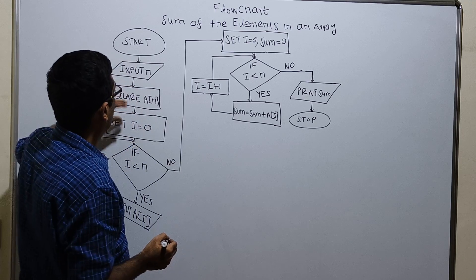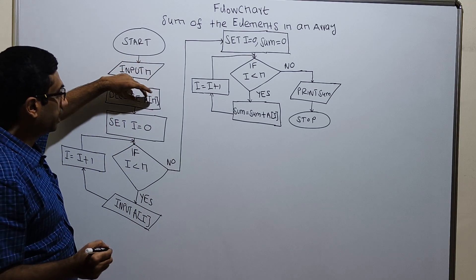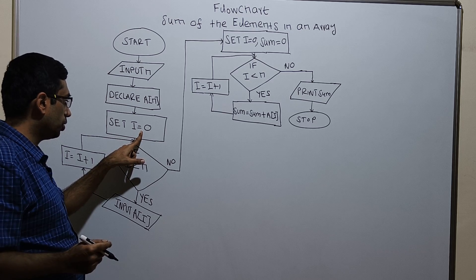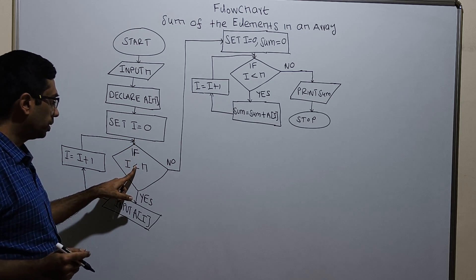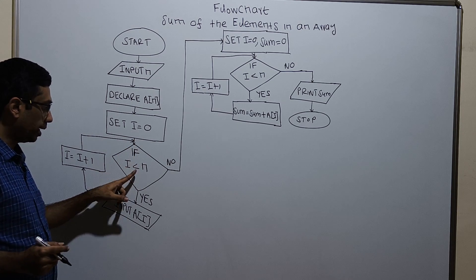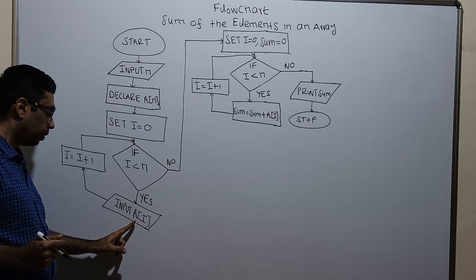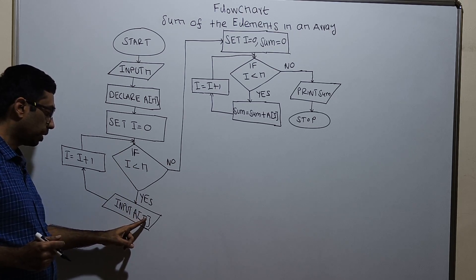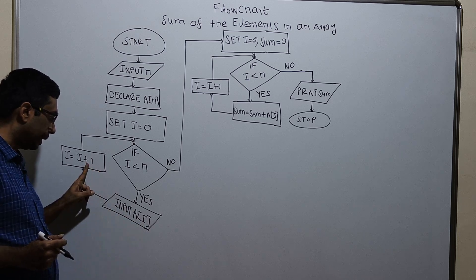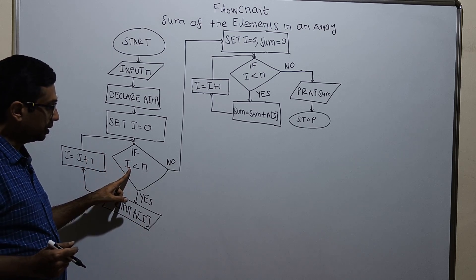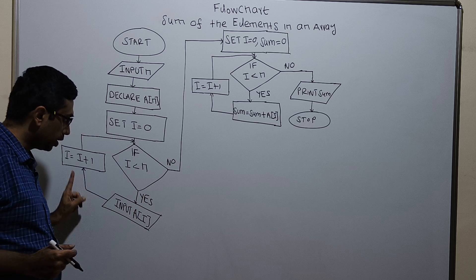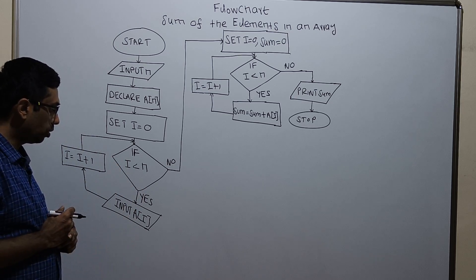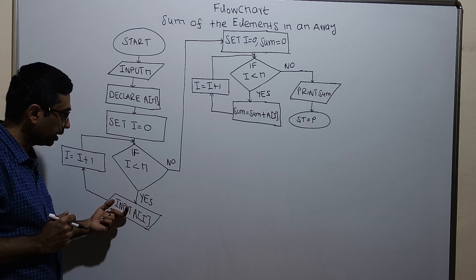So in this flowchart I am inputting the array size n, declaring the array with size n. This is the input loop with i equal to 0. This will go from 0 to n minus 1. The value for index a of 0 will get stored. i will be incremented by 1. Again the condition is checked. So this loop will execute continuously. The values from a of 0 to a of n minus 1 will get stored in this loop.